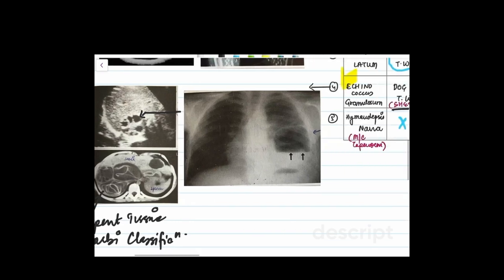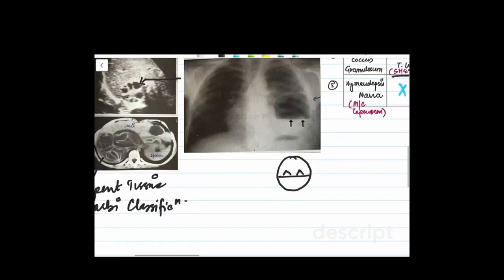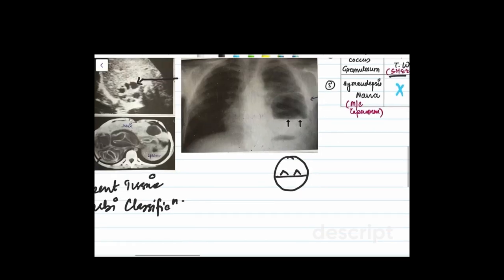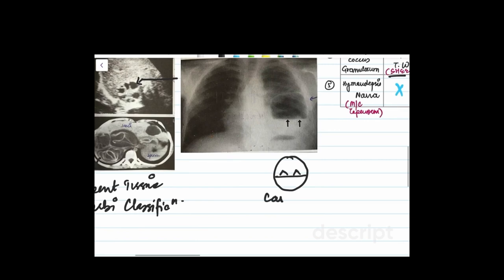Now hydatid disease of the lung also has a named sign. As you can see, this is a cavity on which there are floating daughter hooklets of the hydatid cyst. This is known as the Camelot sign and this is present in pulmonary hydatid.